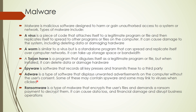Let's quickly recap the malware types. A virus is a piece of code that attaches itself to legitimate programs — additional code is attached — and then replicates to spread to other programs or files on the system. It can cause damage including deleting data or damaging hardware. A worm is similar to a virus but it is a standalone program that can spread and replicate itself independently.